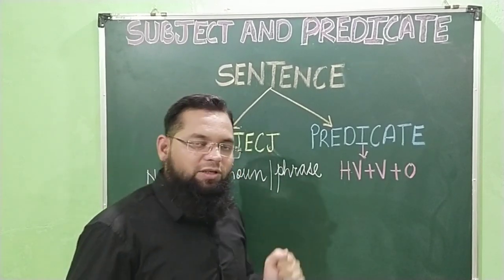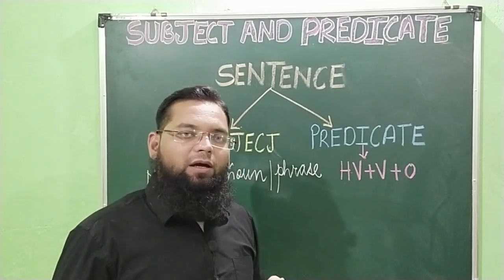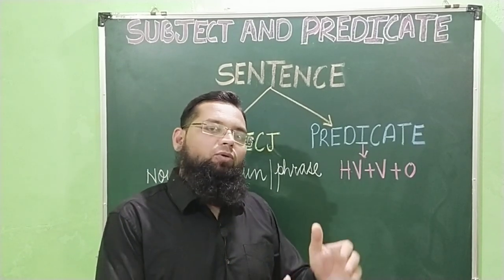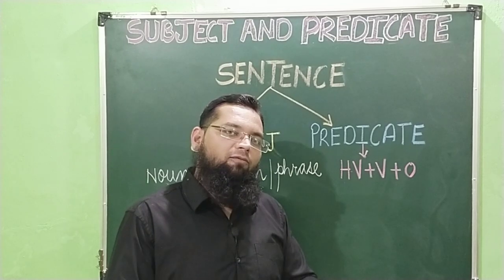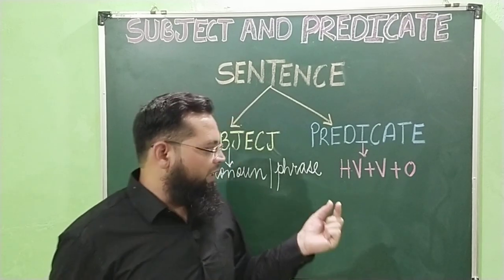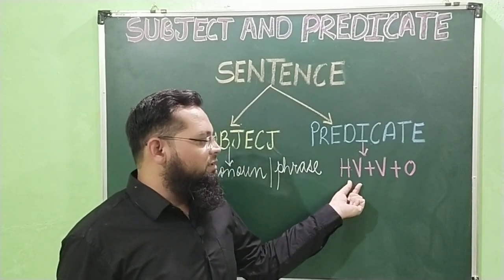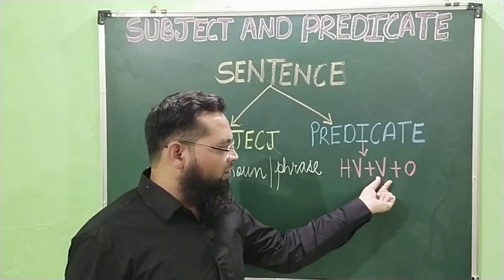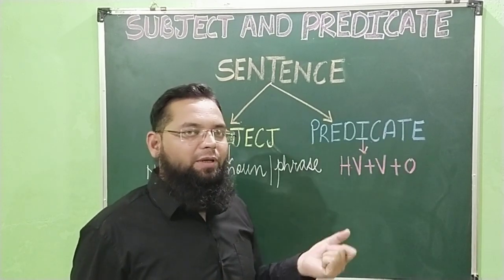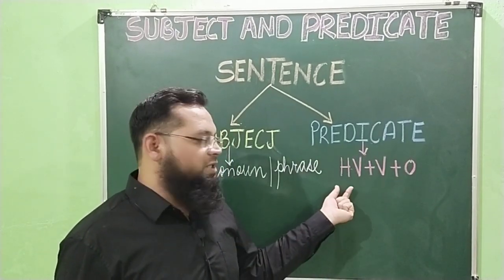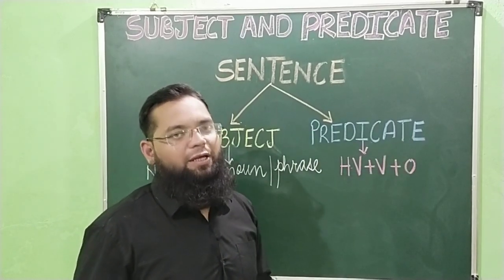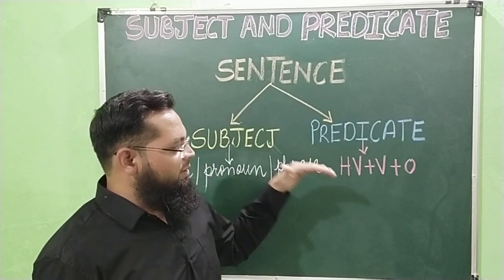Now, what is the definition of predicate? Predicate is the part of the sentence which tells us more about the subject. Predicate sentence का वो हिस्सा होता है जो subject के बारे में कुछ बताता है. And the predicate will always start with the helping verb, followed by the verb and object or complement. Predicate हमेशा helping verb से start होगा, उसके बाद verb, फिर object या complement.